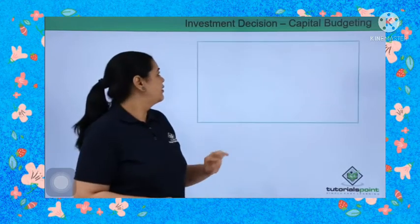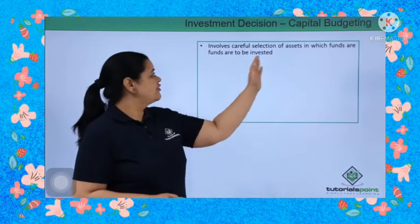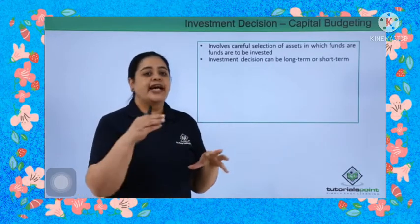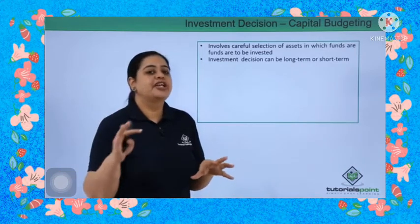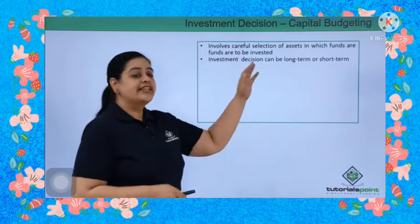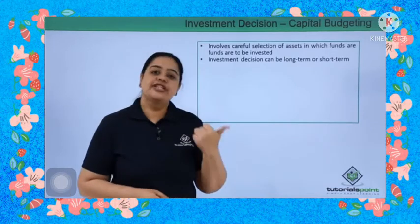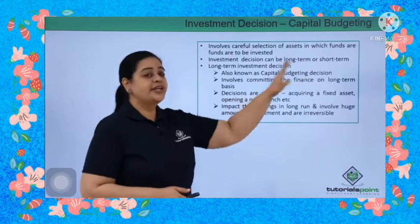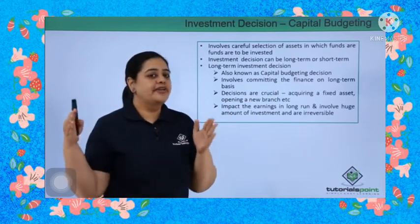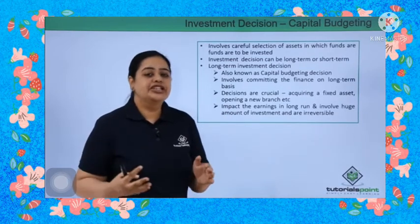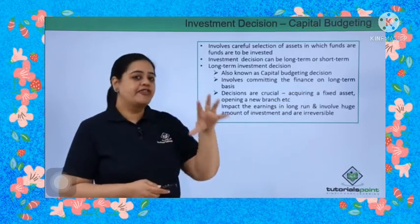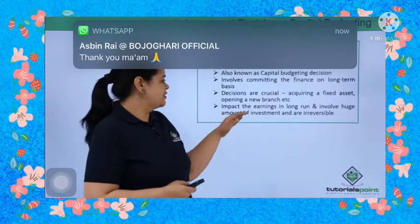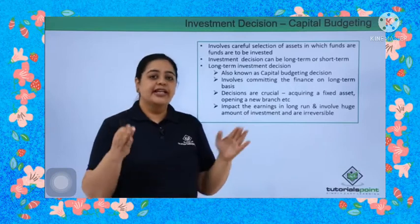The first is the investment decision — capital budgeting. This involves careful selection of assets in which funds are to be invested. We assess which fixed assets are required and which are avoidable, and how much money would be invested in those fixed assets to start or expand the business. Long-term investment decisions are also known as capital budgeting decisions, where you commit finance on a long-term basis. These decisions are crucial because acquiring fixed assets or opening a new branch involves a lot of effort, and if it goes wrong, your business gets impacted.